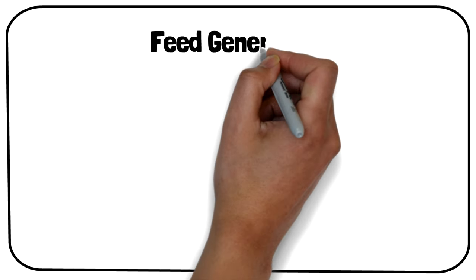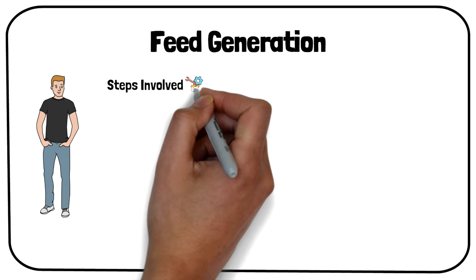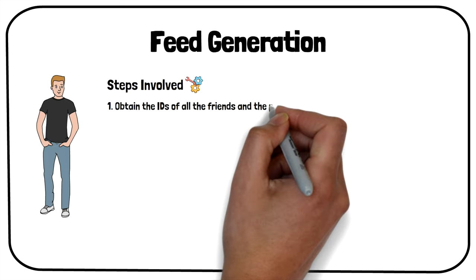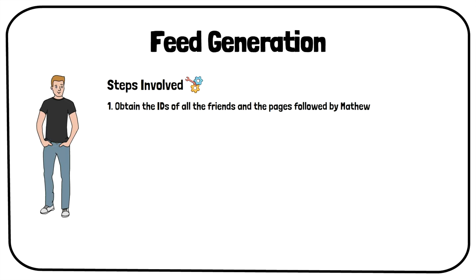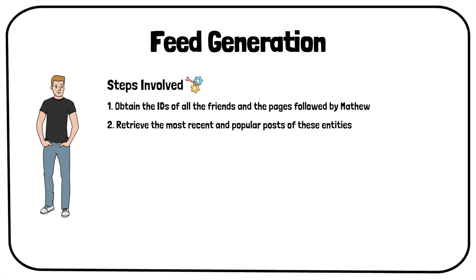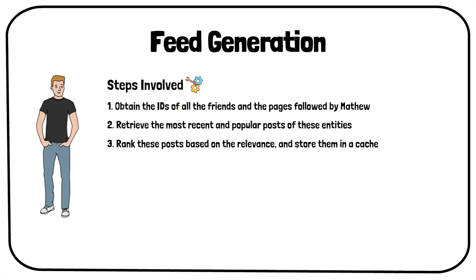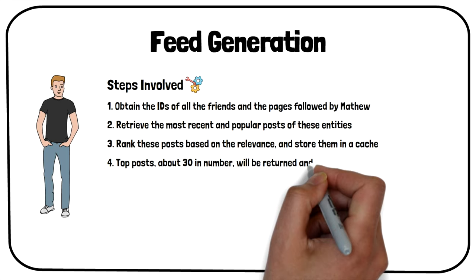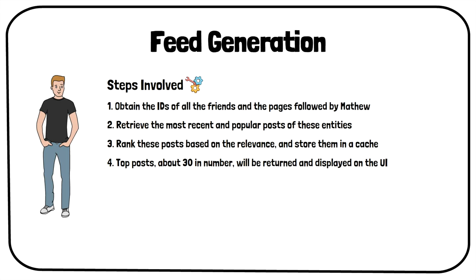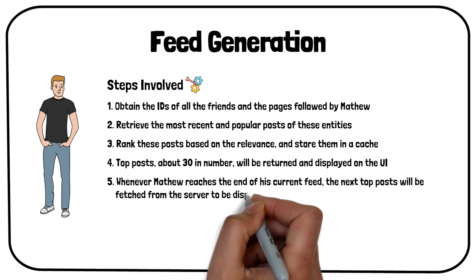To understand feed generation, let us take an example. This is Matthew. He has just logged onto Facebook. We need to generate the newsfeed for him. We will first obtain the IDs of all the friends and the pages followed by Matthew. Then, we will retrieve the most recent and popular posts of these entities. We will rank these posts based on relevance and store them in a cache. The top posts, about 30 in number, will be returned and displayed on the UI. Whenever Matthew reaches the end of his current feed, the next top posts will be fetched from the server to be displayed to him.